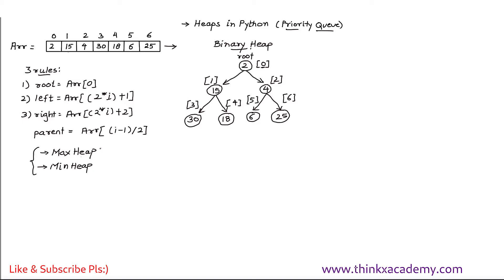The property of a max heap says that the value of the parent node will always be greater than the values of its child nodes — both left and right. For a min heap, we have the opposite condition: the parent is always lesser than its children. In this tutorial we will focus on max heap; we can simply invert the operators to obtain a min heap.